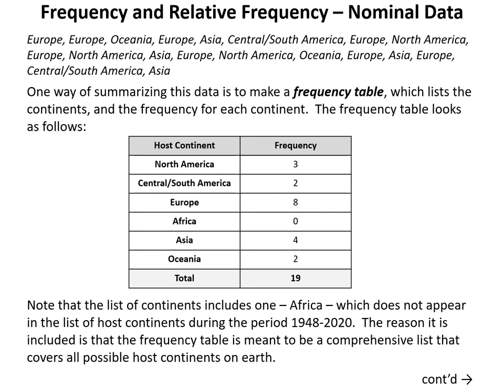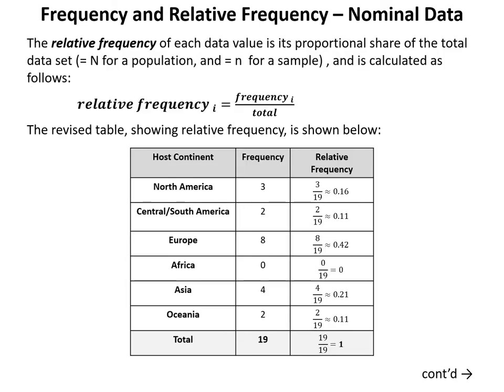Note that Africa appears in the list even though it does not appear as a host continent during 1948 through 2020. The reason it's included is that frequency tables are meant to be comprehensive lists — in this case covering all possible host continents on earth.